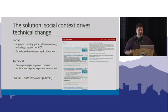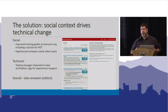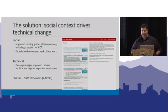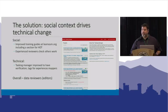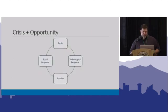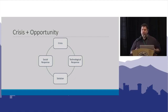The solution from the Humanitarian OpenStreetMap Team was both social and technological. Socially, they created new resources like learnOSM.org and had experienced reviewers check work, with an option to request review during a mapathon. Technically, they implemented the Tasking Manager — now in version 3 — to provide specific instructions and guidance to users. That's been incredibly successful: in recent hurricanes, the mapping response has been much faster.